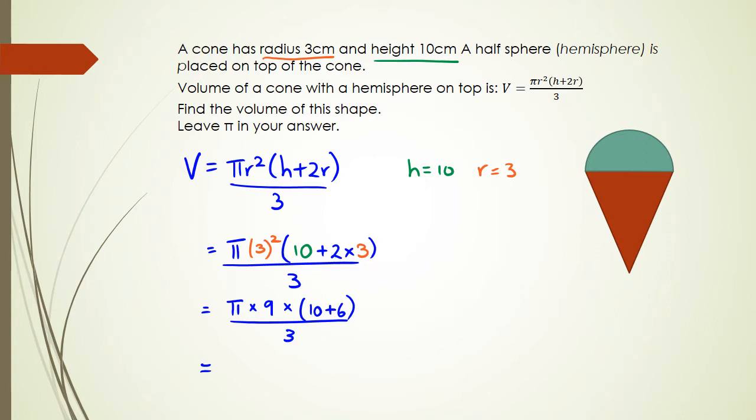The way I do it is π × 9 × 16 / 3. You can actually cancel out the 9 and 3 because they have common factors of 3. That'll become 1 and 3, so your final answer ends up being π × 3 × 16, which equals 48π cm³.